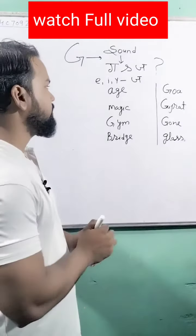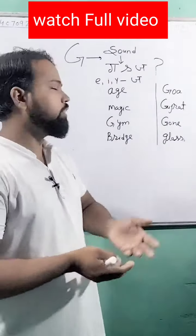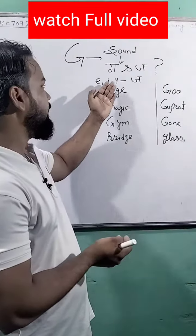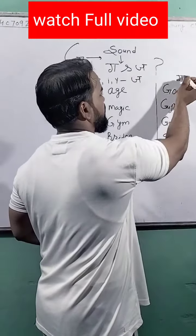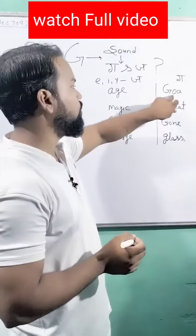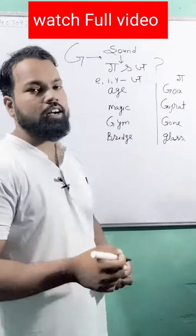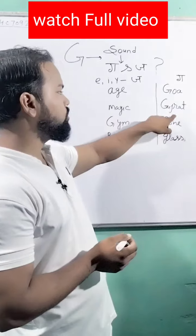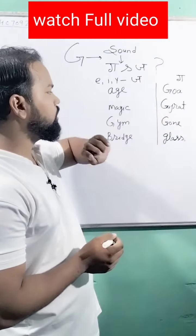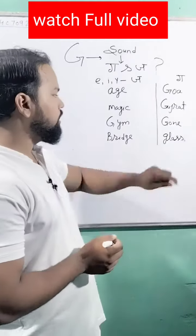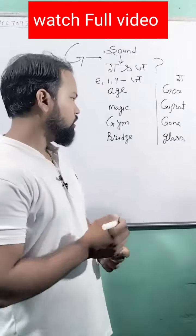And next, whenever after G any other letter besides E, I, and Y comes, then we call it 'ga'. Like 'goa' — because O comes after G, so it's called 'goa'. And 'gujira' — U comes after G, so it's called 'ga'. And 'gone' — O comes after G, so it's called 'ga'.